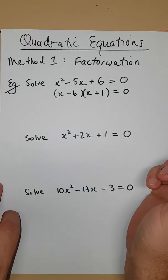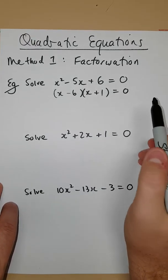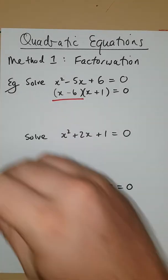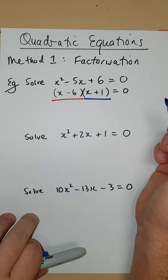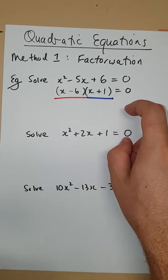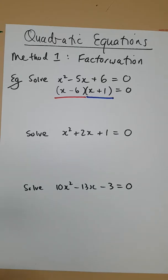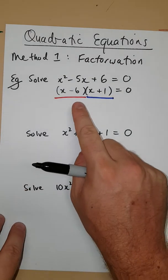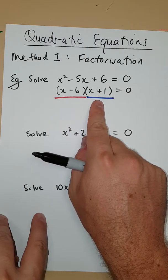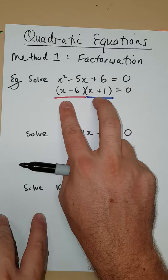Now, once we get to this point in the solution, you'll notice that we have this thing multiplied by this thing, and the product of those two things is equal to 0. So, recall that if two things multiply and give an answer of 0, then either one of them has to be 0, the other one has to be 0, or in fact they could both be 0.